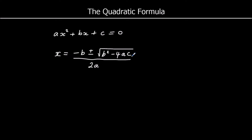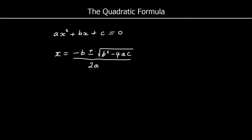Let's look at an example of this. So we've got a question here: solve 3x squared plus x minus 7 equals zero. So it's in the form ax squared plus bx plus c equals zero, and we need to know what a is, what b is and what c is.